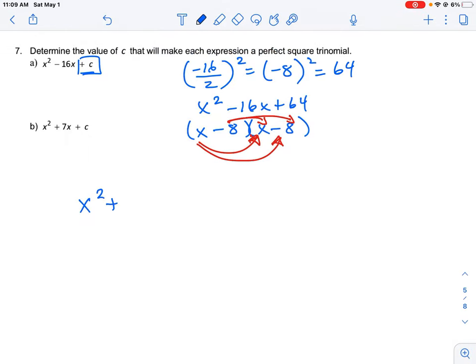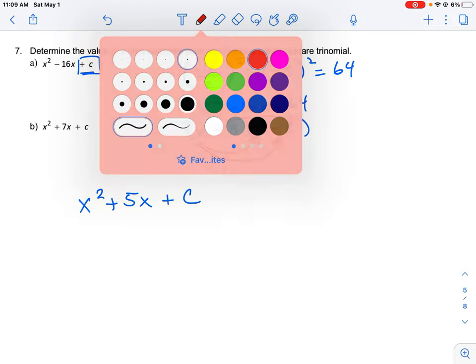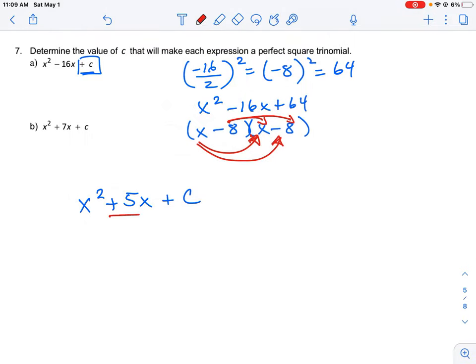So if I give you x squared plus 5x plus c, and we want to know what number for c would make this a perfect square trinomial, what we would do is we would take the middle term, so in this case it's going to be plus 5, we divide that by 2, and then we square it. So this is a little bit of, it doesn't turn out to be an integer value.